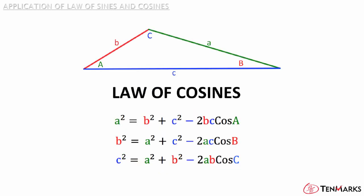The Law of Cosines tells you that the square of a side of a triangle is equal to the sum of the squares of the other sides minus 2 times the length of those sides times the cosine of the angle opposite. There are three formulas for the Law of Cosines, one for each side. The trick to solving triangles is figuring out which law or proportion to use.